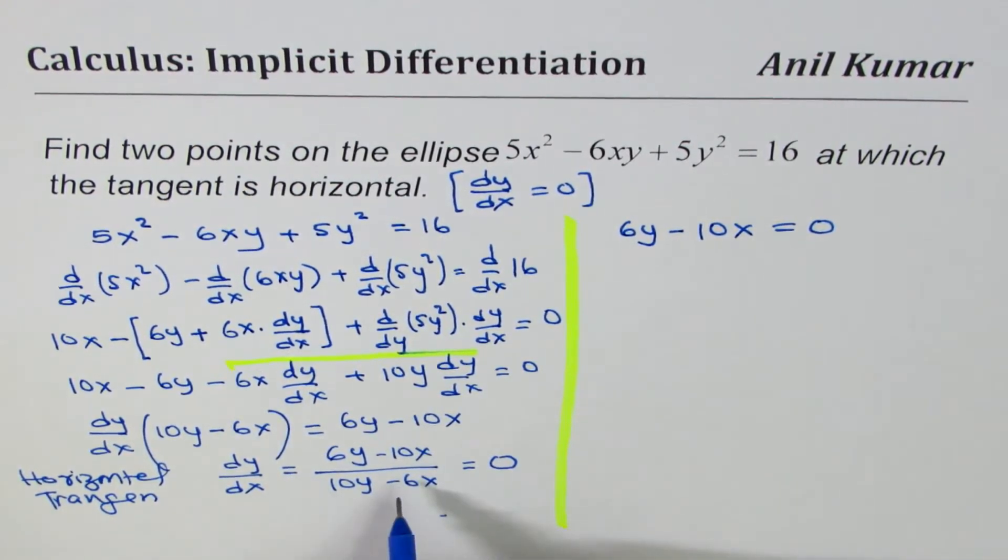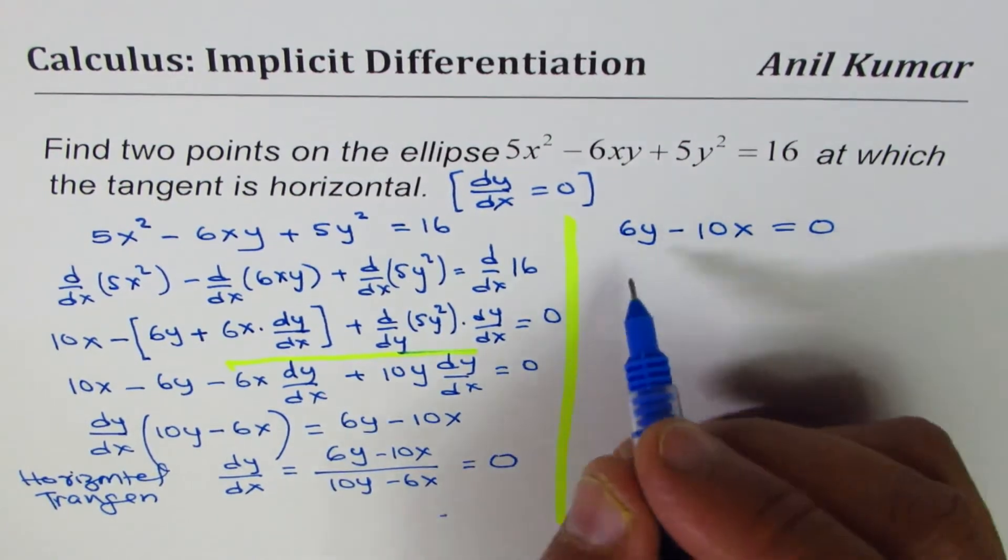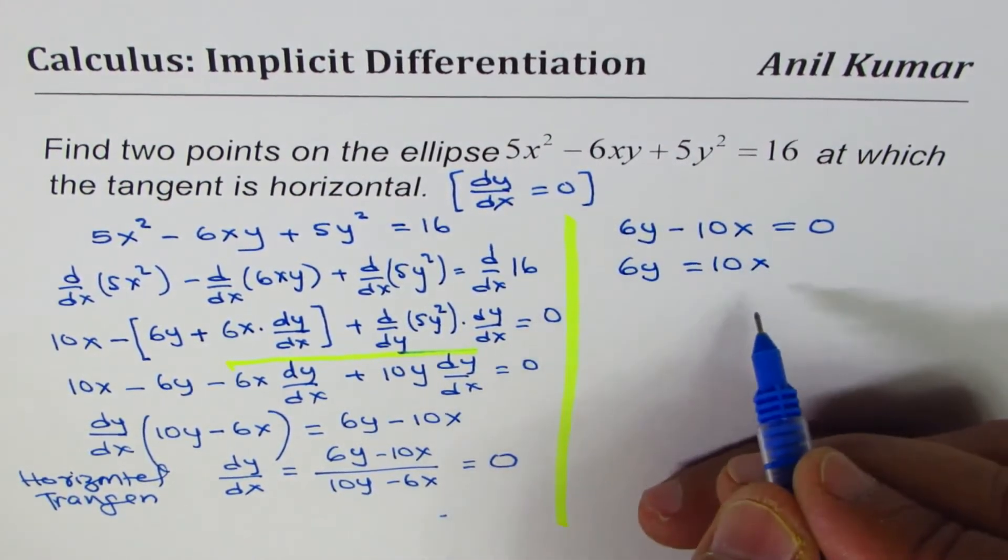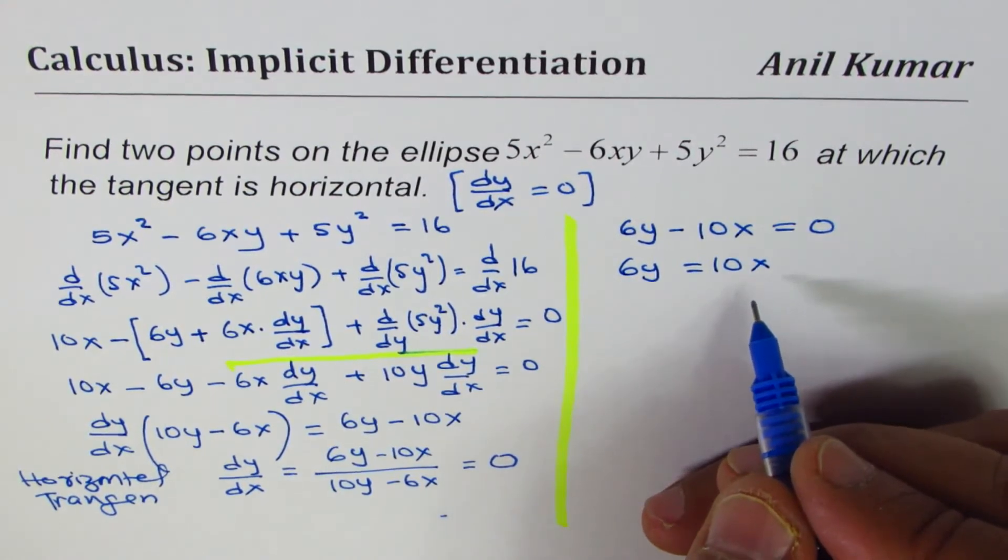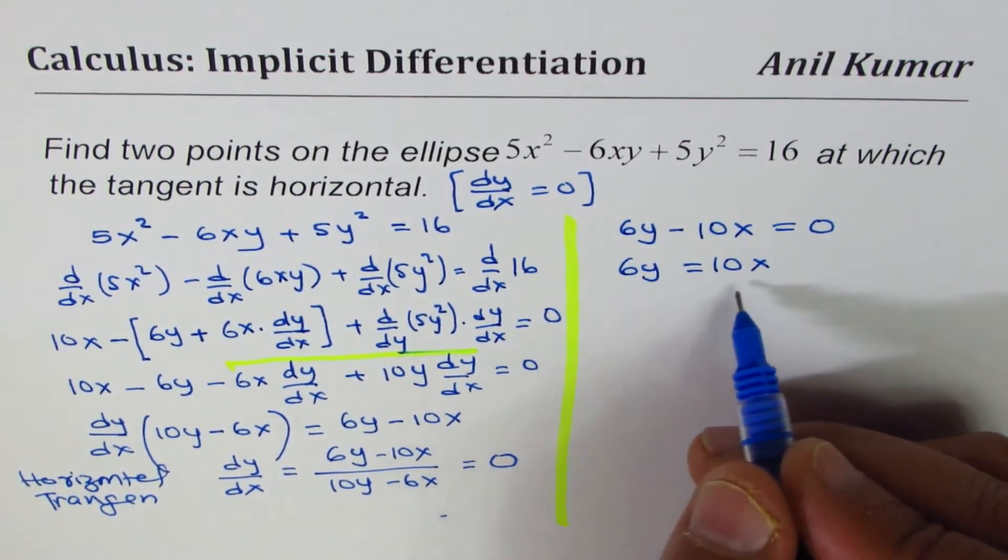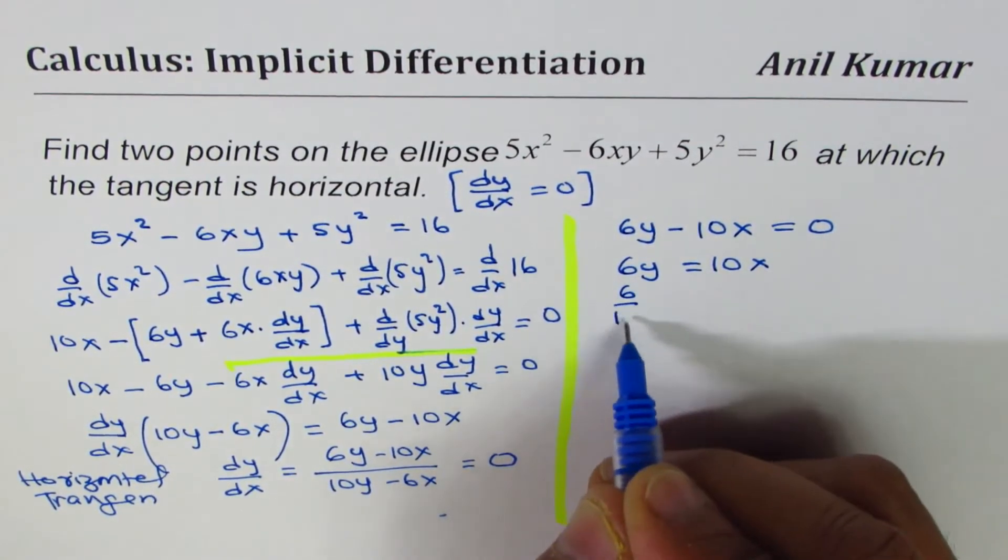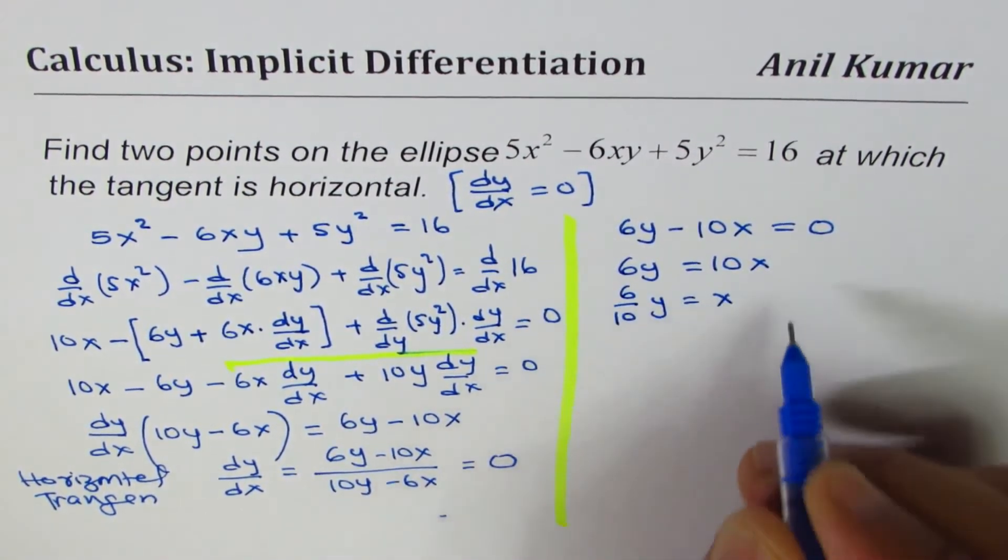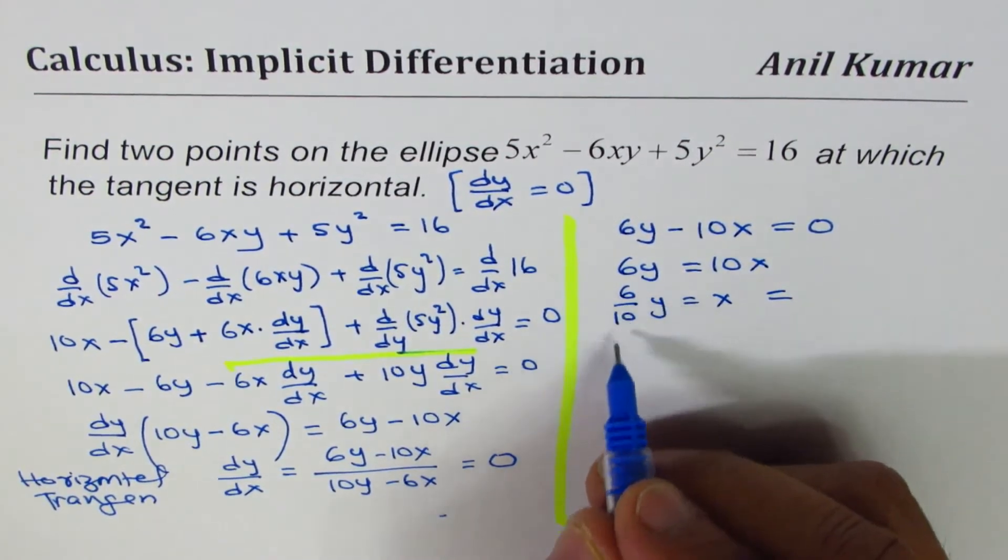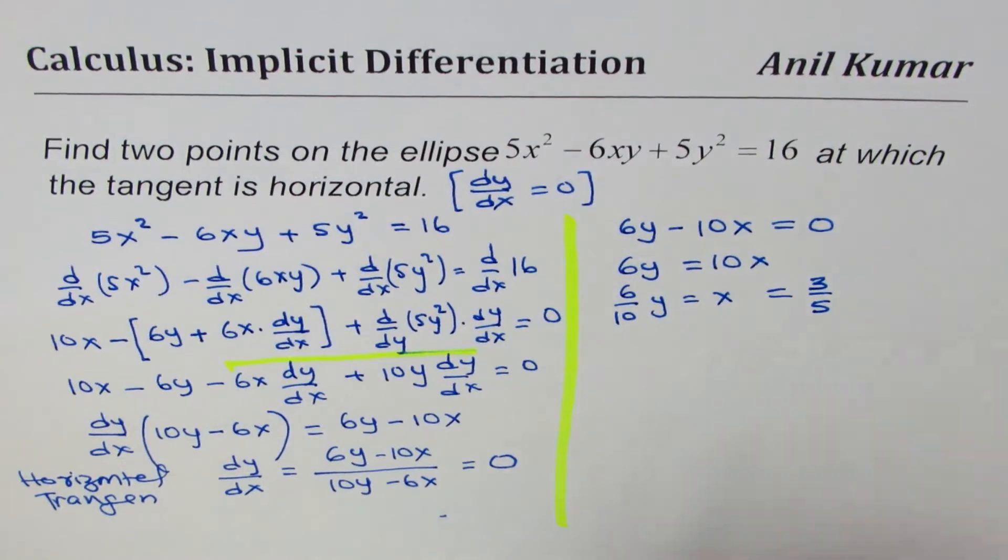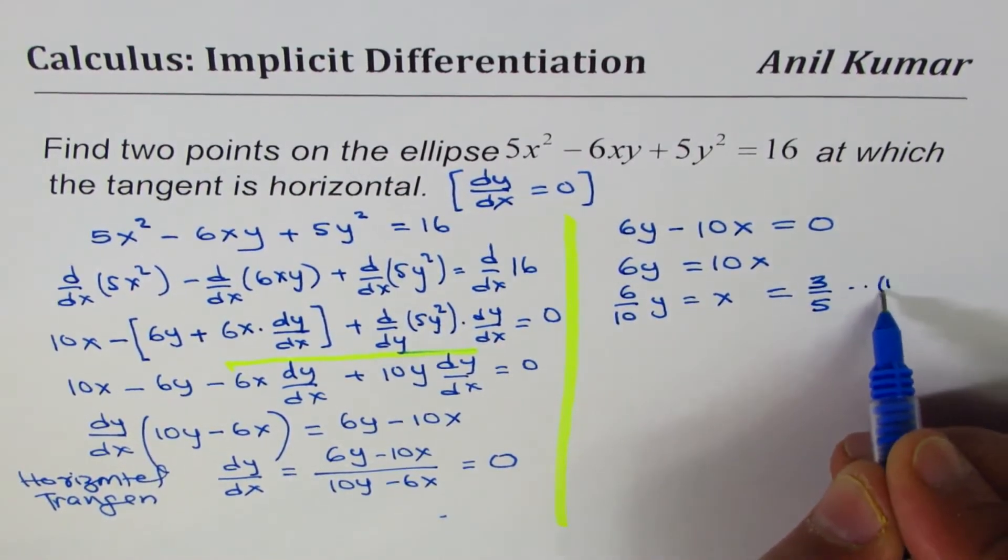Now, solving this, we get 6y equals to 10x. And we can write x in terms of y or y in terms of x. So let us write, we can divide, 6/10y equals to x, or x is equal to 3 over 5. x is 3/5y.